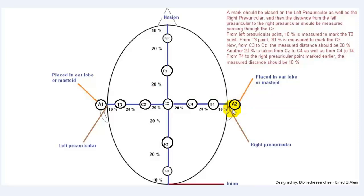To review: a mark is placed on both the left auricular and right auricular, and the distance from left auricular to right auricular is measured passing through CZ. From the left auricular, 10% marks T3; from T3, 20% marks C3; from C3 to CZ should be 20%. Another 20% is taken from CZ to C4, and from C4 to T4. From T4 to the right auricular point, the measured distance should be 10%.